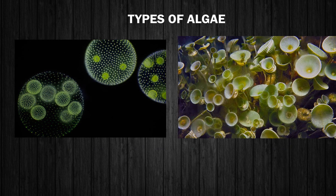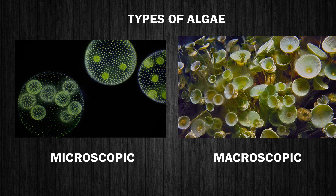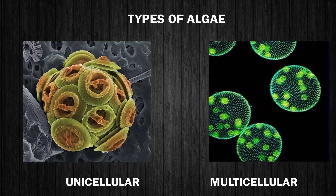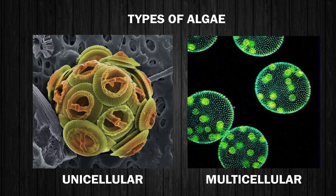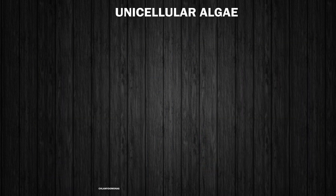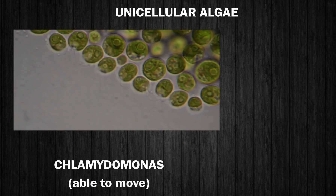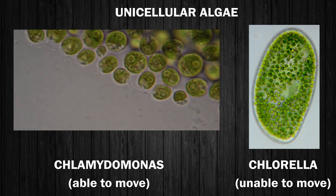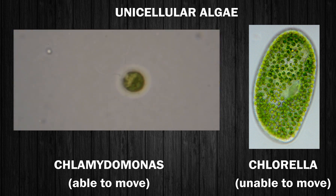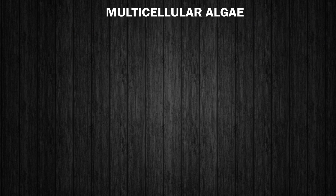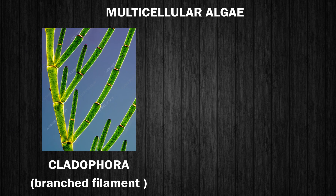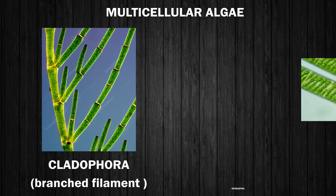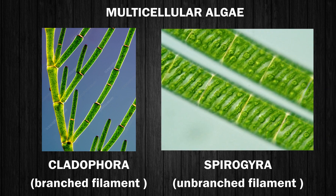Algae are found in different forms. They are both microscopic and macroscopic, and unicellular as well as multicellular. Some unicellular algae such as Chlamydomonas can perform movement, but there are some unicellular algae such as Chlorella which are unable to move on their own. Some multicellular algae have branched filament structures such as Cladophora, whereas some have unbranched filaments such as Spirogyra.